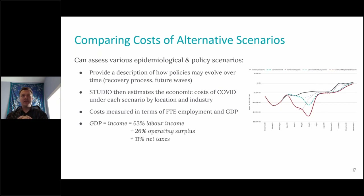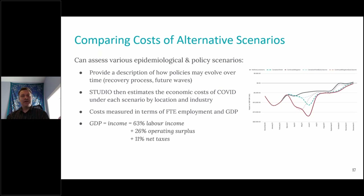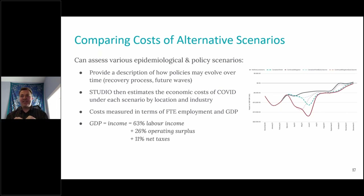The costs are measured in terms of full-time equivalent employment — essentially aggregate hours — and gross domestic product. GDP can sometimes seem a little abstract, but what's produced is income. Roughly speaking, 63% of that is labor income, 11% is net direct taxes going to the government, and 26% is various kinds of operating surplus in terms of interest, rent, and profits. So my point here is just to point out that GDP is people's income.